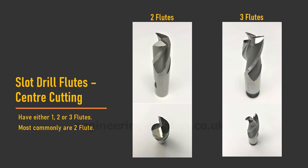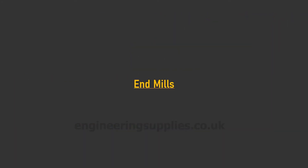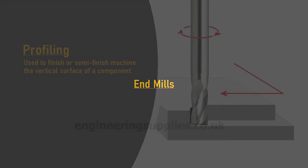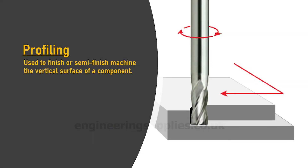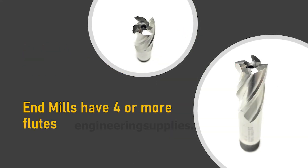As a result, slot drills are generally microns smaller in diameter than an end mill, and are classified as a slot drill by having three or fewer flutes. An end mill's main purpose is for milling on the outside of a job, or what we would call profiling. An end mill is generally identified as having four flutes or more.